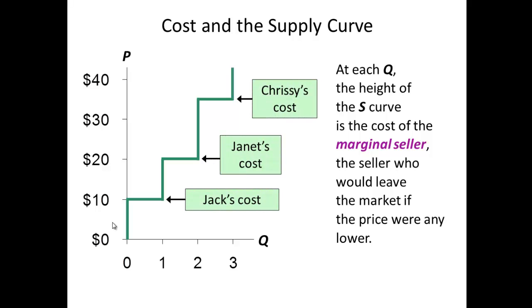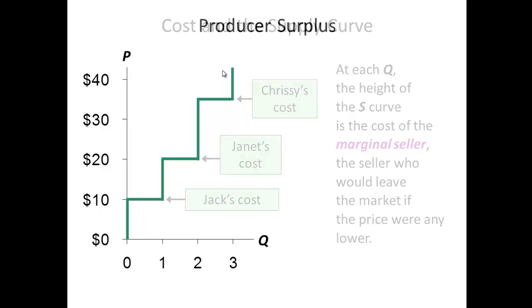And as you can see, here's Jack's cost at $10, here's Janet's cost at $20, here's Chrissy's cost at $30. And if we included even more producers costs, that line would smooth out creating our supply curve.